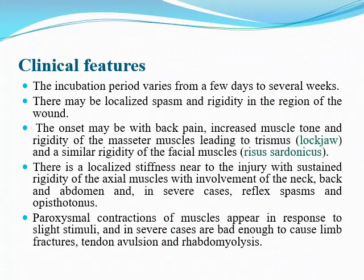The incubation period varies from a few days to several weeks. Sometimes there is latent tetanus — the spore may remain in the wound for several years before the patient develops tetanus. There is also localized or local tetanus, where features only happen in one limb or one part of the body. Usually, localized spasm and rigidity starts from the limb affected by the wound, then later spreads to other parts of the body.